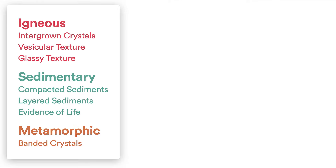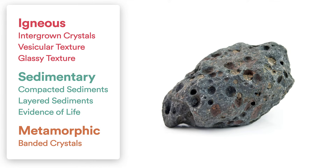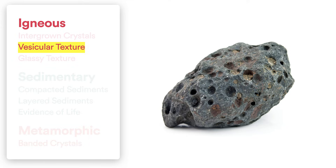So let's look at some examples. On the left here, I have my list of all the different characteristics we just went through, and we're going to pull some rocks in and try to identify them together. Here's our first sample. What jumps out at me are these little air bubbles. As we mentioned earlier, we call this a vesicular texture, and so this is an igneous rock. I would simply say this rock is igneous due to its vesicular texture, or the trapped air bubbles or gas pockets.